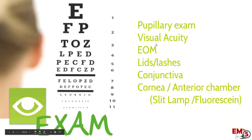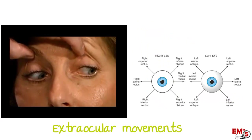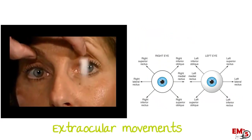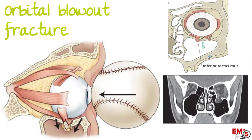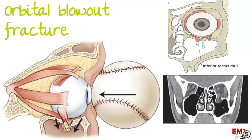Now let's talk about extraocular movements, where we're testing all the different rectus muscles in the orbit. If you have the patient look down and up and you see that one eye is not moving appropriately, in the setting of blunt facial trauma this is concerning for an orbital blowout fracture. Here there's a fracture usually in the floor of the orbit, causing the rectus muscle to get stuck in fracture fragments and essentially pinning the eye in place, resulting in an abnormal extraocular movement exam. You can confirm this on a CAT scan.